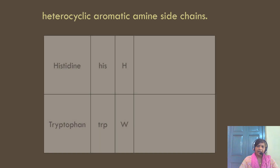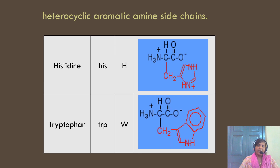Histidine and tryptophan have aromatic amine side chains. Histidine has an imidazole ring — a heterocyclic compound with two nitrogen atoms — linked to an alanine group. Tryptophan has an imidazole ring linked to a benzene ring, forming an indole ring. Three-letter codes: HIS for histidine and TRP for tryptophan; single-letter codes: H for histidine and W for tryptophan.